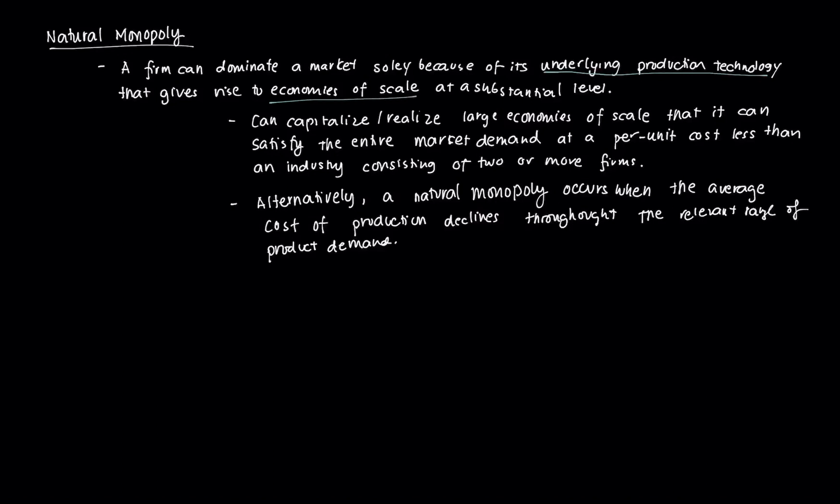This gives rise to economies of scale at a substantial level. When we say economies of scale, as production becomes greater, the average cost goes further down. For a monopolist, some of these technologies have a lot of barriers to entry or are quite expensive. However, the monopolist can capitalize on these barriers to entry, and as it increases production, it brings down its average cost as it produces more and more.